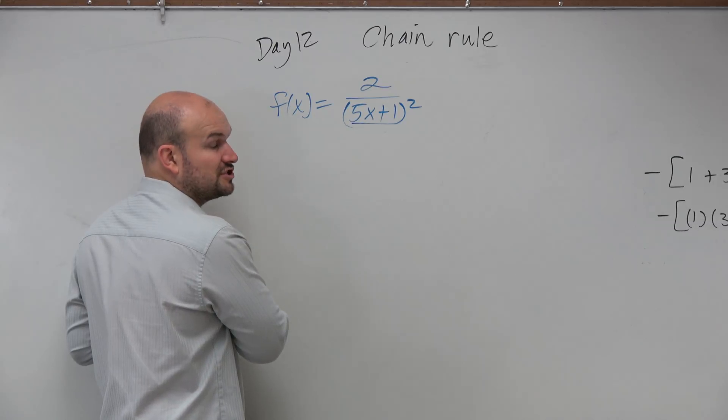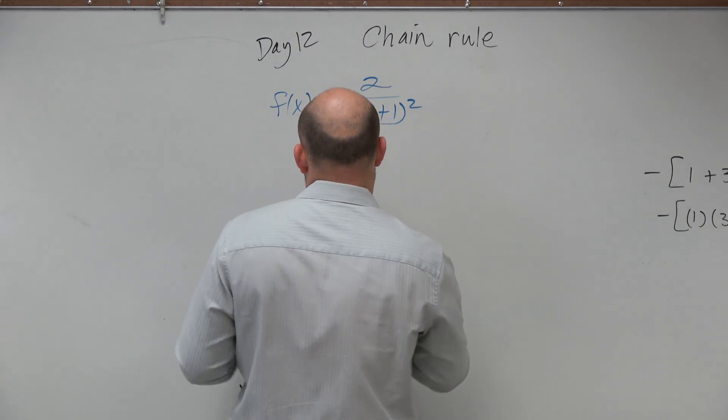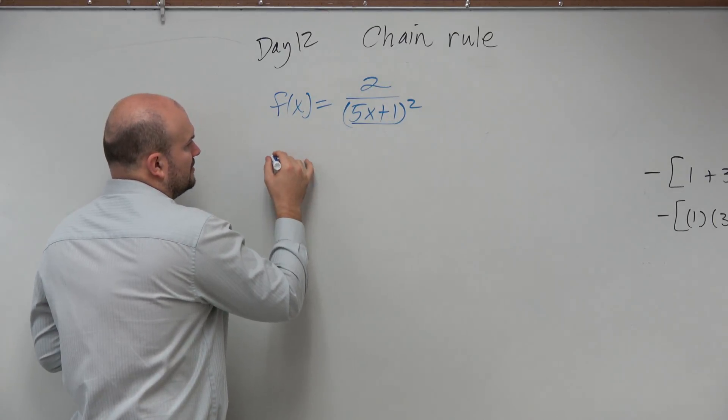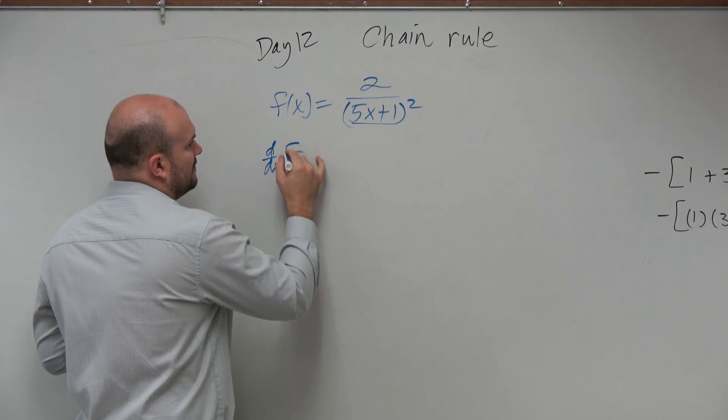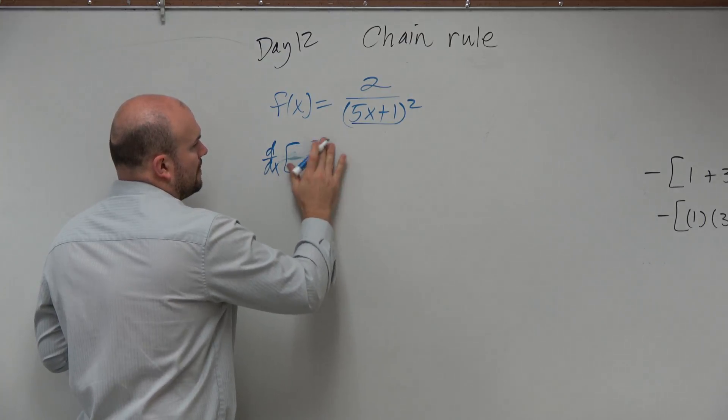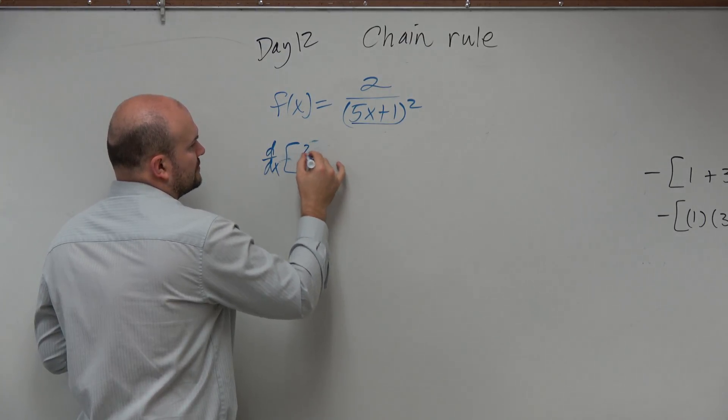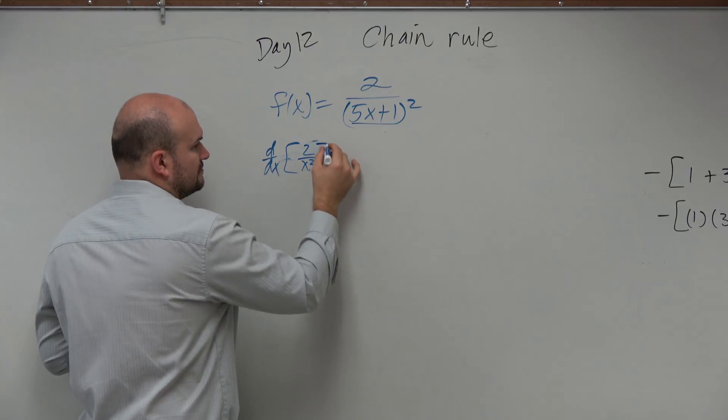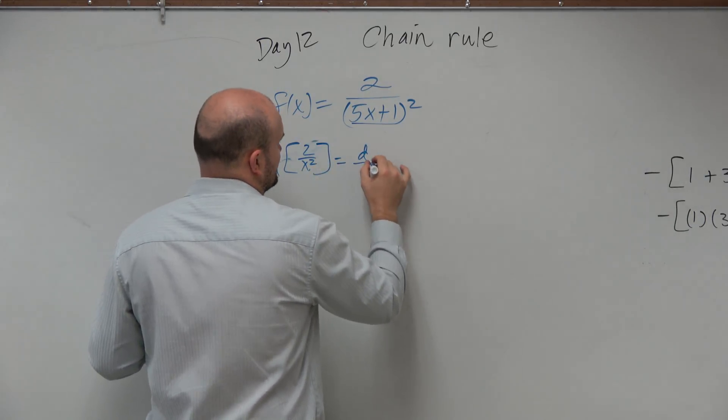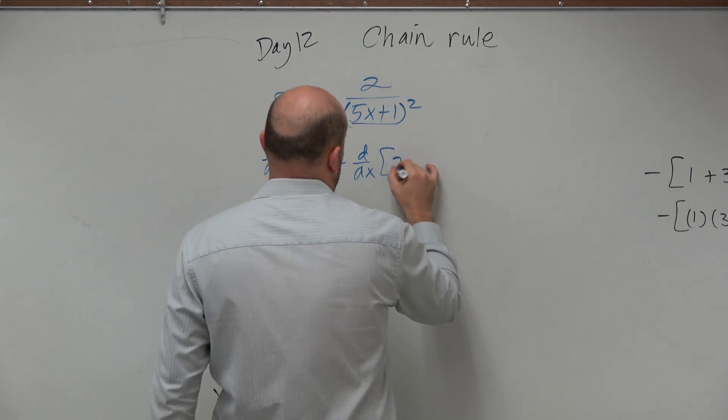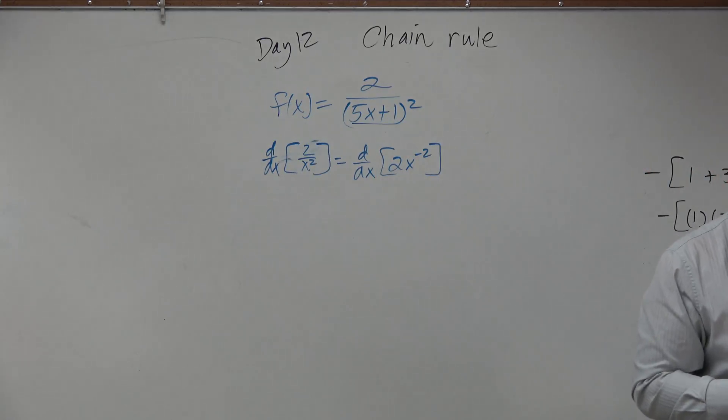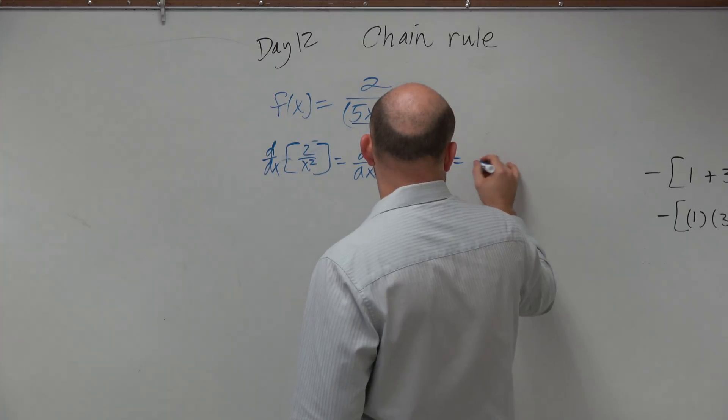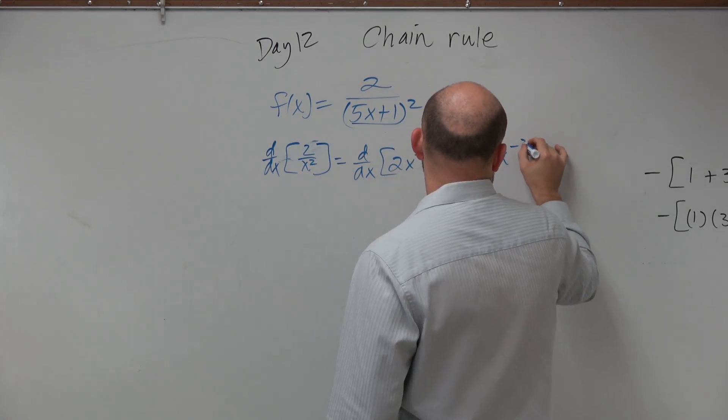And I can say my outside function is going to be 2 over x squared, right? So if I just want to find, let's just say, d over dx of 2 over x squared, which is really equal to d over dx of 2x to the negative second. Would everybody agree with me? Which is really just equal to negative 4x to the negative third.